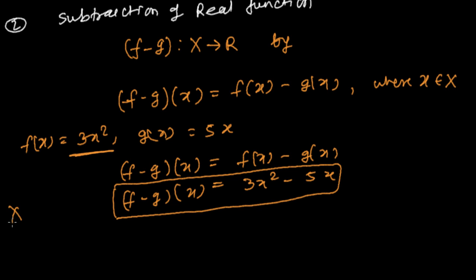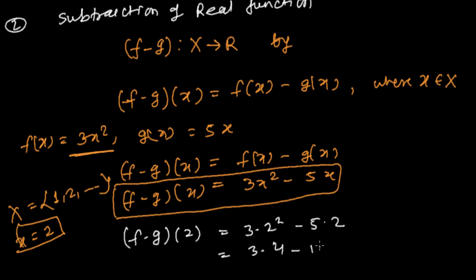Now let's say x equals 2. In this case, (f - g)(2) will be 3 times 2² minus 5 times 2. That's 3 times 4 minus 10, which equals 12 minus 10. That's 2, and that's our answer.